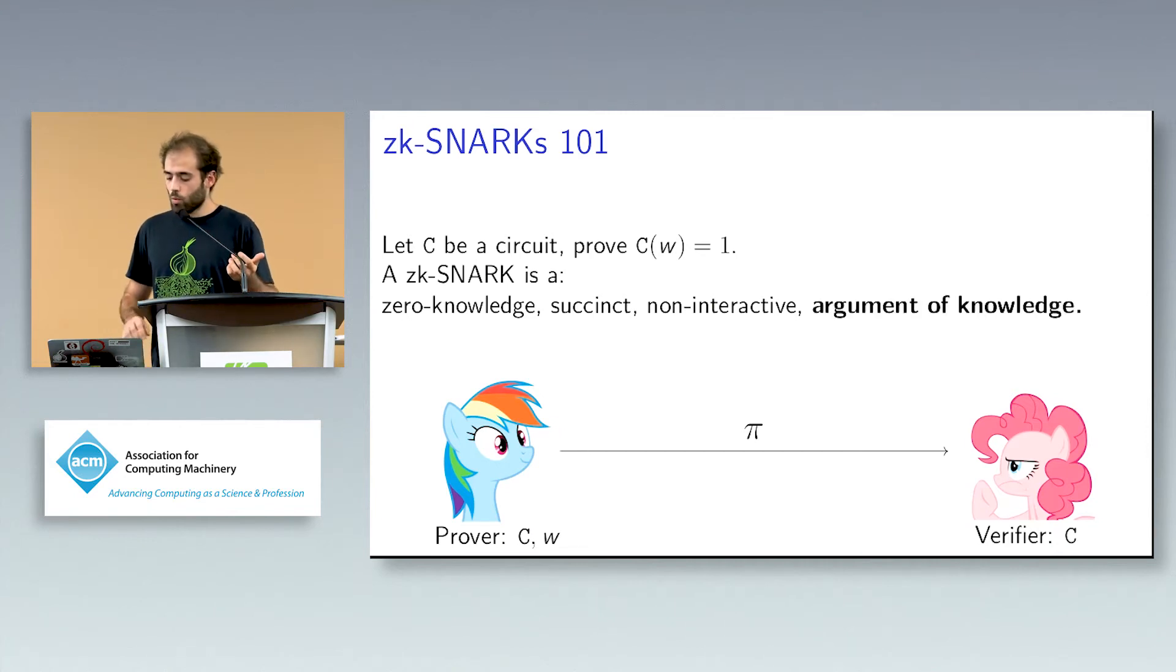After that, we would like it to be an argument of knowledge. This notion protects the verifier. What it basically says is that if you give me a proof and this proof verifies, then you must really have known the witness. What we formally say is that for any adversary that gives me this circuit C, the statement and this proof, there exists an extractor that for any adversarially selected circuit and for any proof is able to recover the witness.